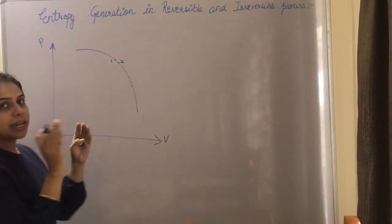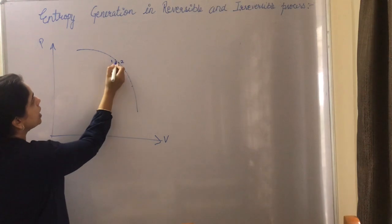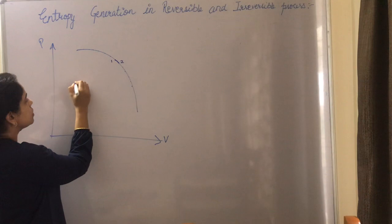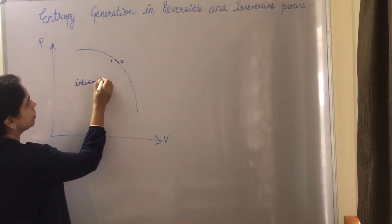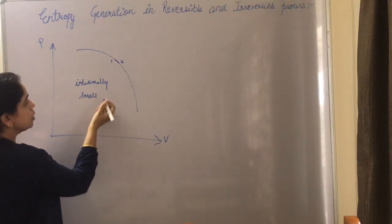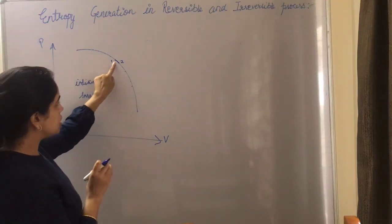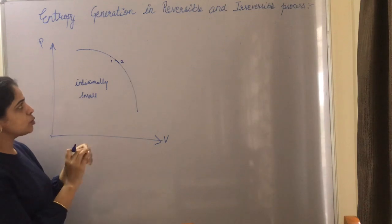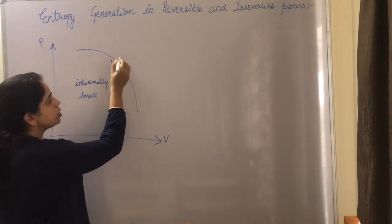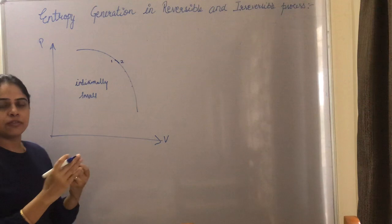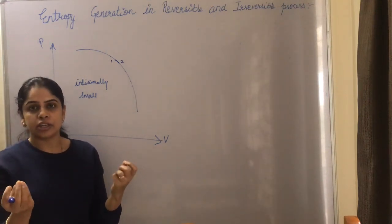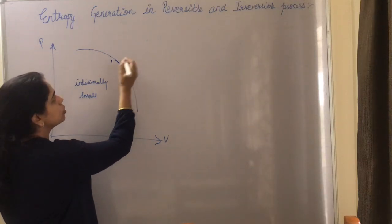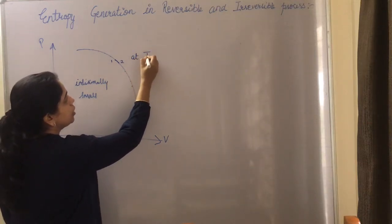States one and two are infinitesimally close to each other, and the heat transfer is executed between these two states. Because the states are infinitesimally close to each other, the temperature of both states is also essentially the same — there is only an infinitesimally small temperature difference. So we can say both states are at temperature T.